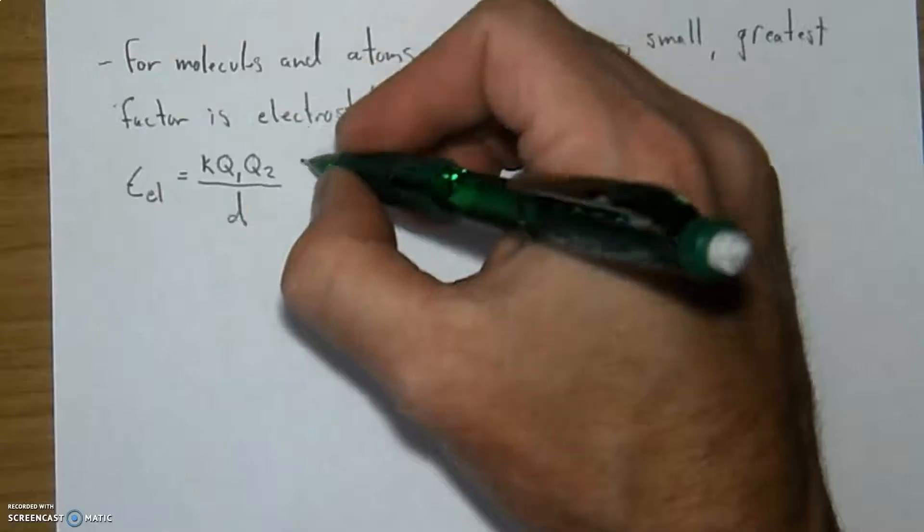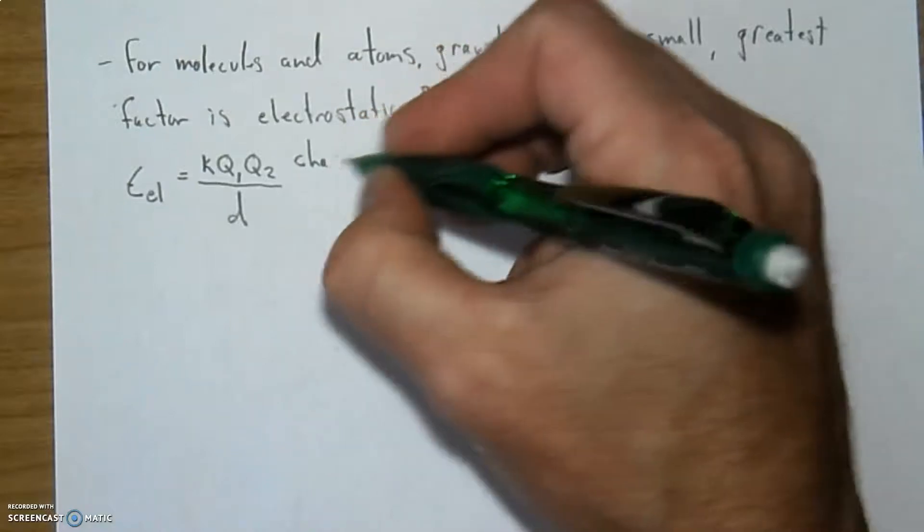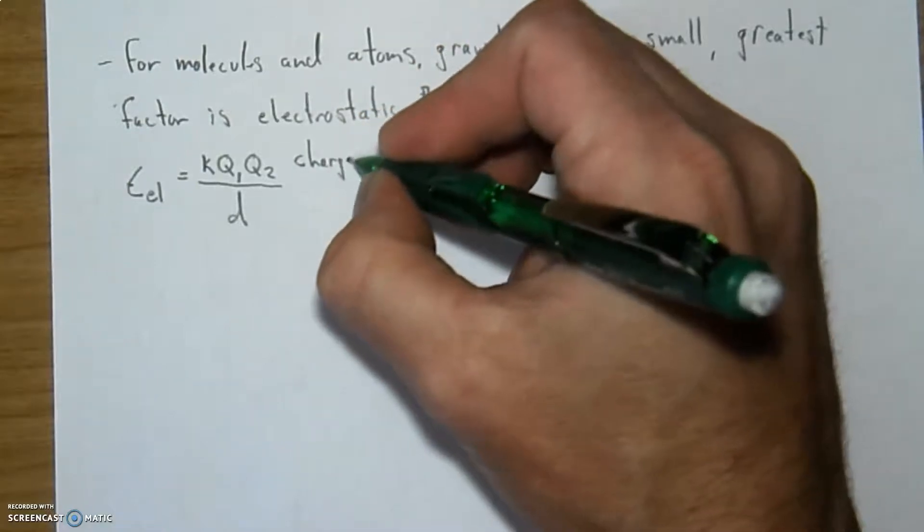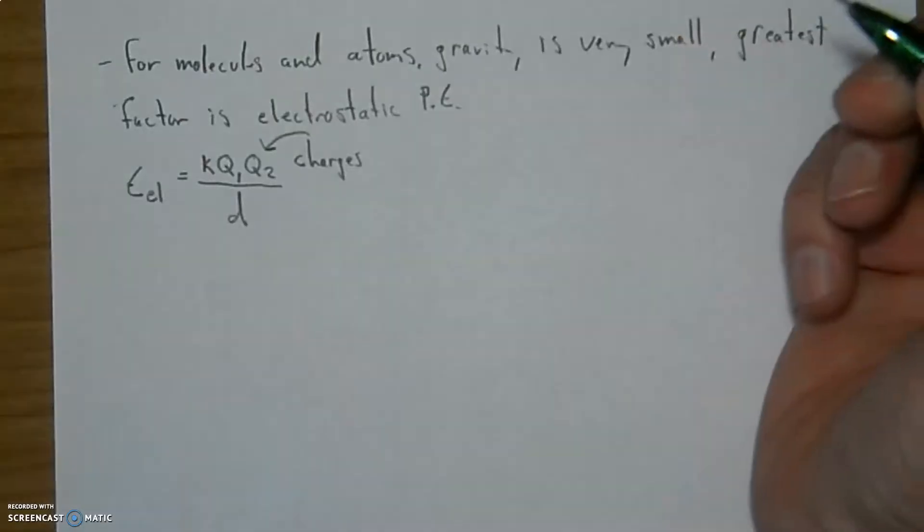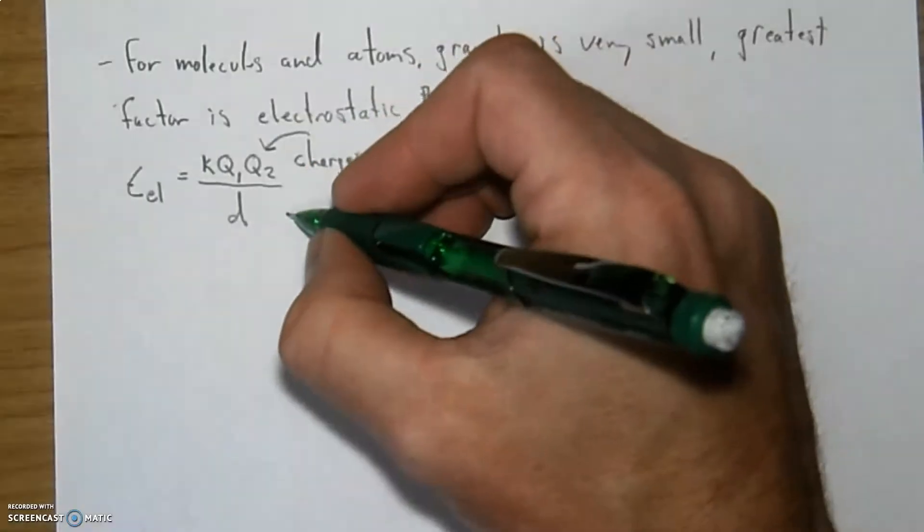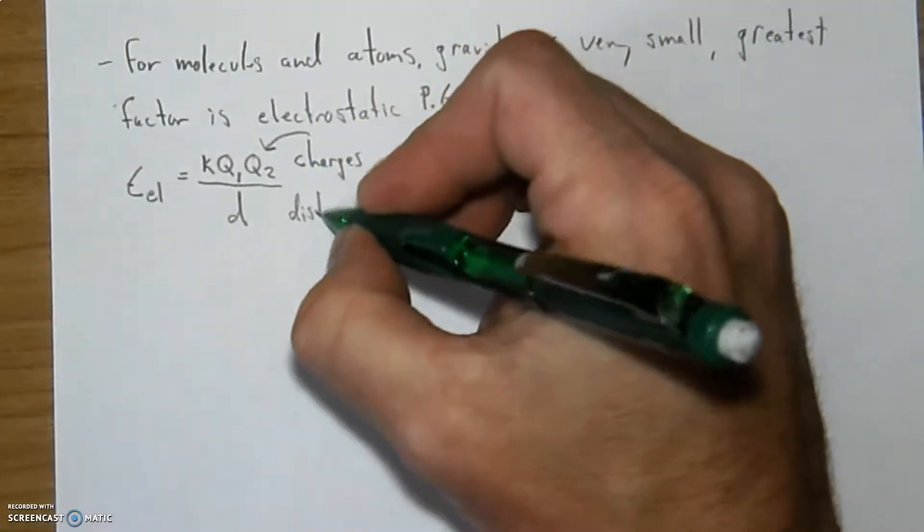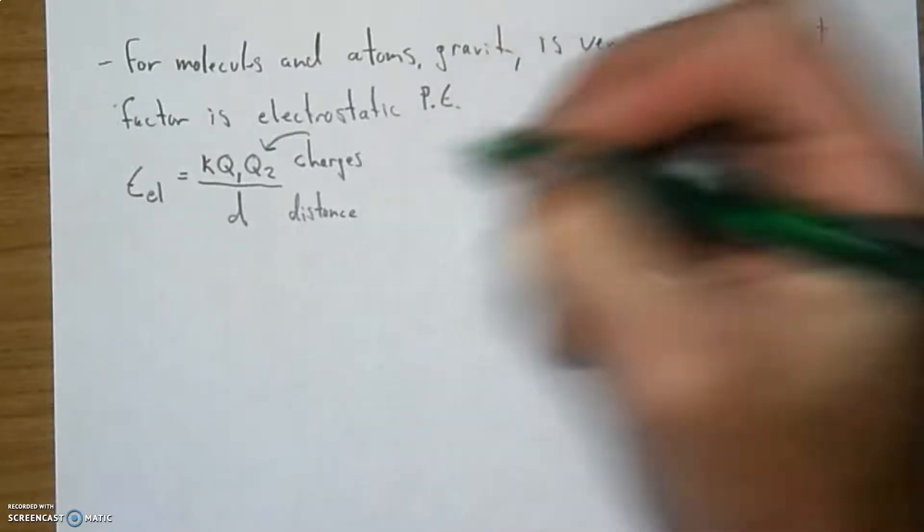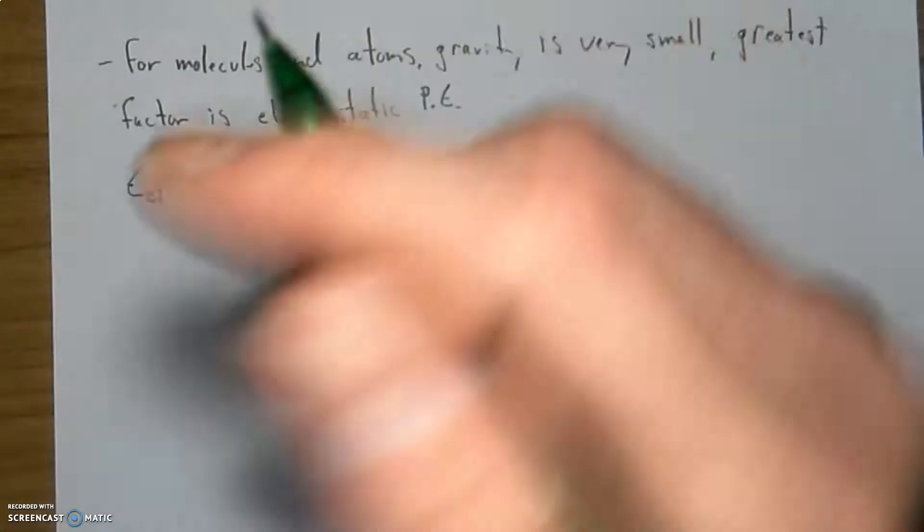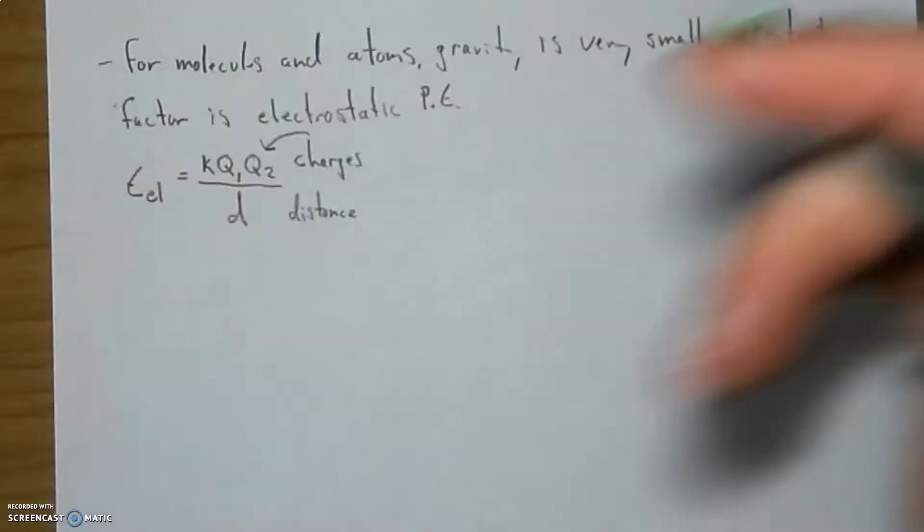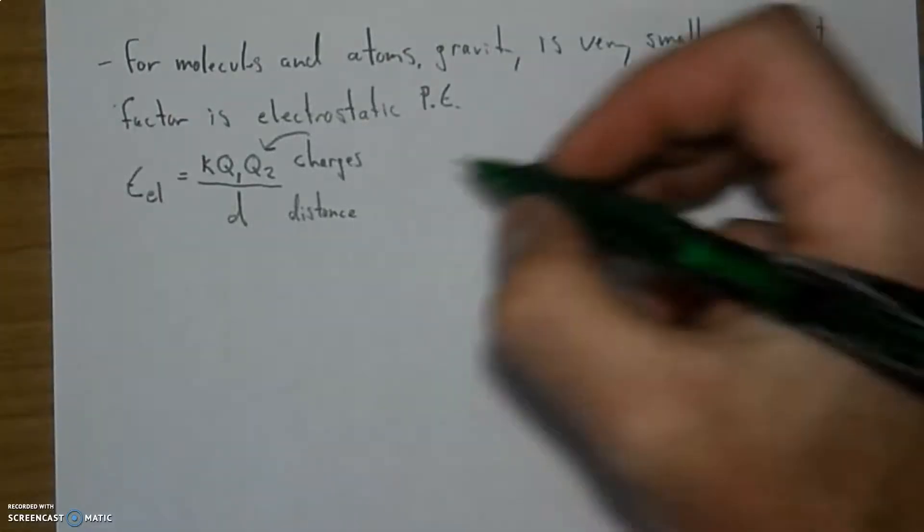These top things up here are the charges on these two atoms. So the charges these atoms have, plus one, minus one, plus two, minus two. And D stands for the distance. The nuclei are away from each other. So that atomic radii sum total, these two particles are from each other.